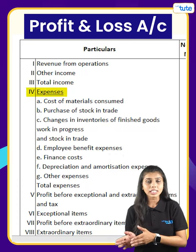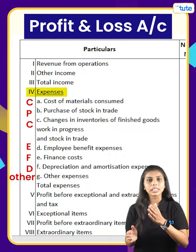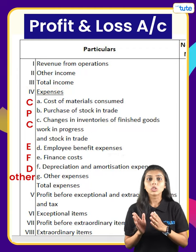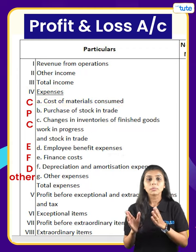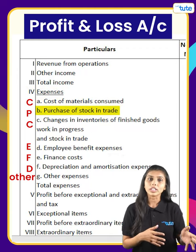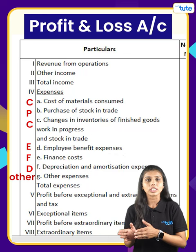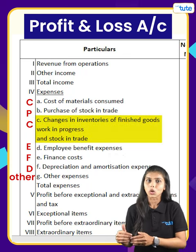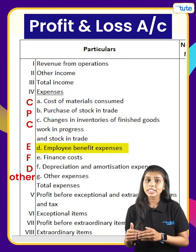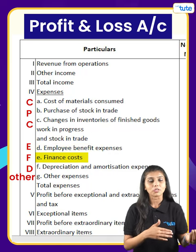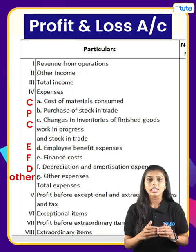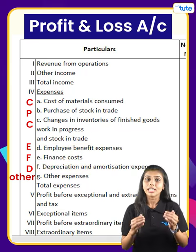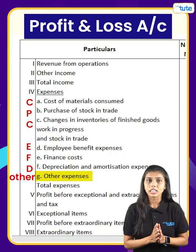Next, expenses. You can remember these as CPC, EFD, others. C for cost of materials consumed, P for purchase of stock in trade, then changes in inventories of finished goods, WIP and stock in trade, E for employee benefit expenses, F for finance costs, and D for depreciation and amortization expenses, and lastly, other expenses.